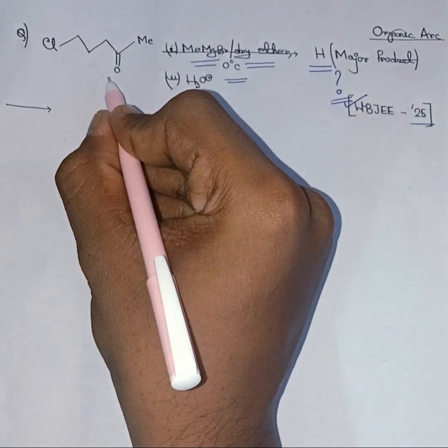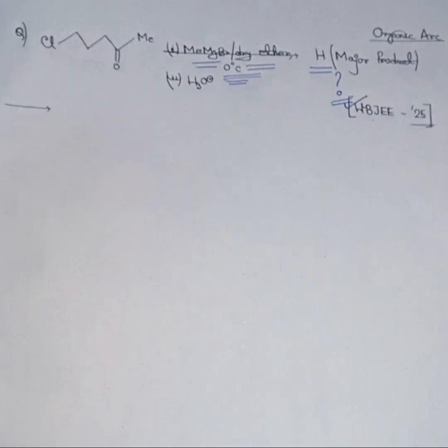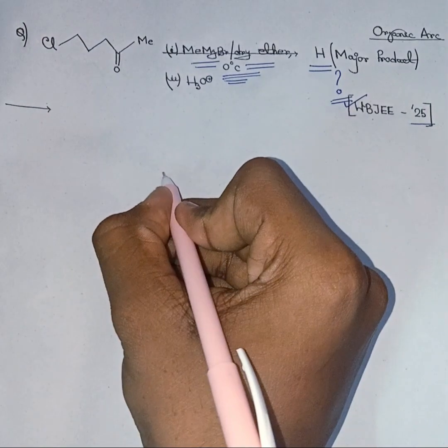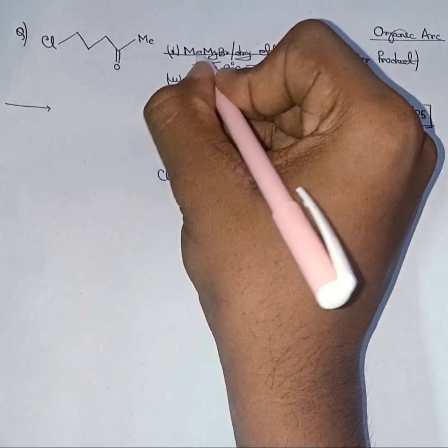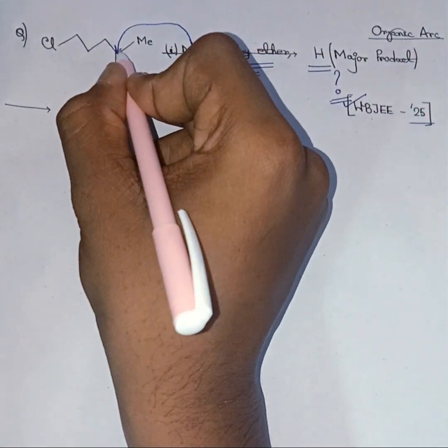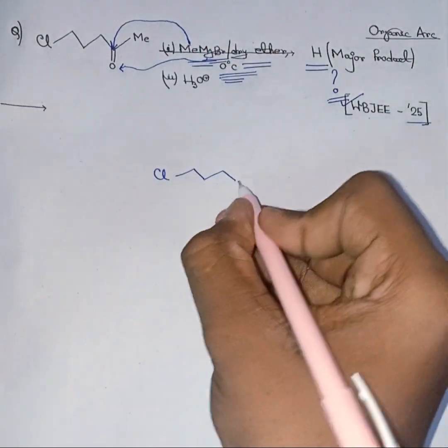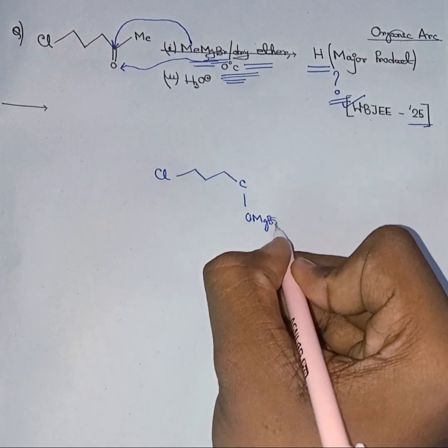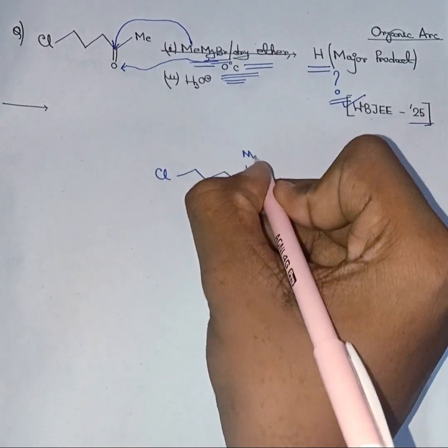When this compound reacts with MeMgBr and dry ether at zero degrees Celsius, a Grignard reagent is created. The Grignard reagent looks like this. This is a chlorine. This Me goes to this carbonyl compound or carbonyl group's carbon, and the MgBr part goes to this oxygen. So it looks like this: O-MgBr, here is another Me and here is another.